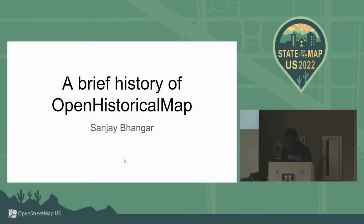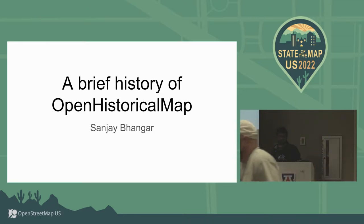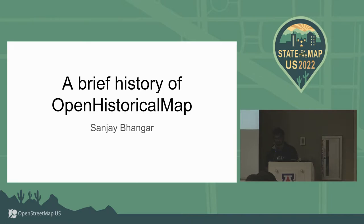This seems like a perfectly appropriate start for this talk — being in the wrong room and then here, tracing a technical history of Open Historical Map. In my head, technical histories are social histories essentially, so it's going to be tracing both a technical and social history of this project that sort of meandered its way through the universe the past 13 years now.